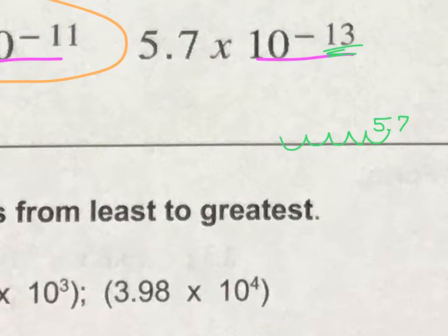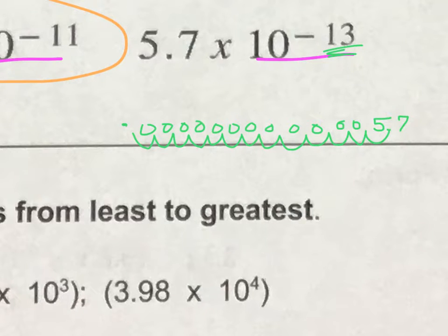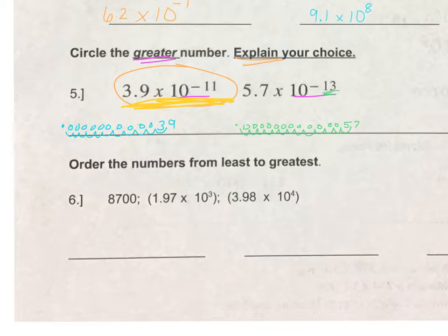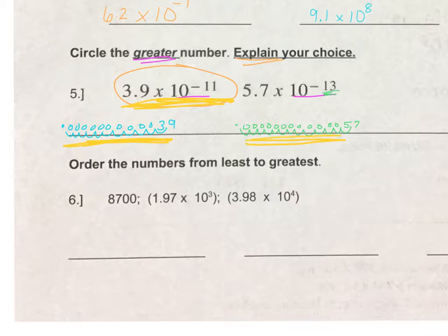Moving the decimal 13 places to the left: 1, 2, 3, 4, 5, 6, 7, 8, 9, 10, 11, 12, 13. Draw the decimal out front and fill it in with zeros. So the second number has more zeros in front of it — it's smaller. So which number is the greater number? It's 3.9 times 10 to the negative 11th — it's a larger number. There are 10 zeros in front of the 39 here, and there are 12 zeros with the decimal point for the other number.